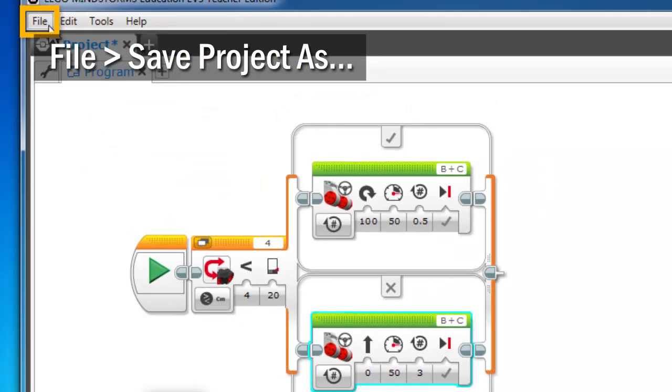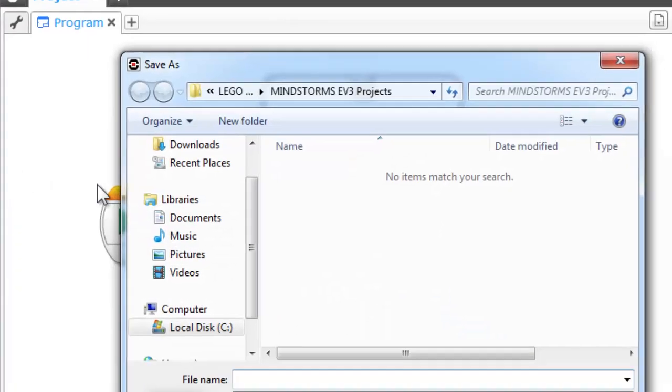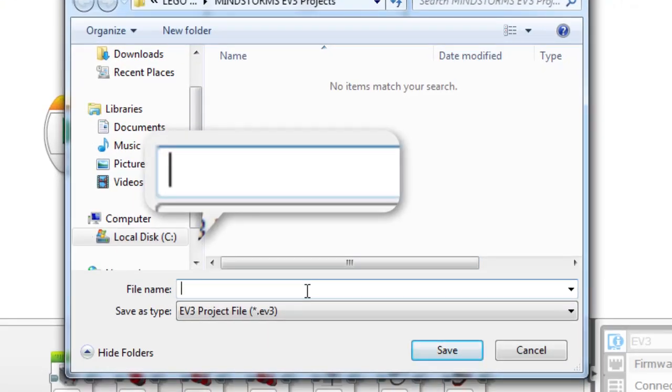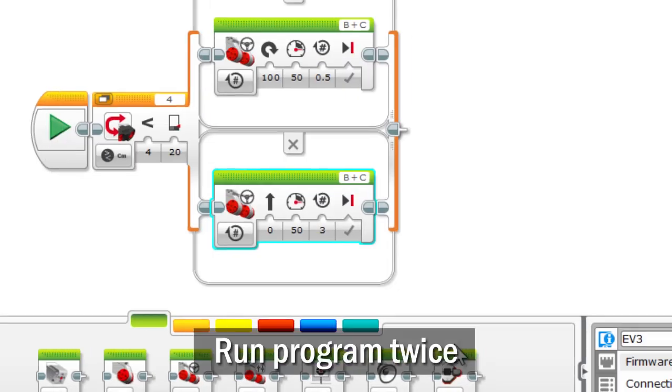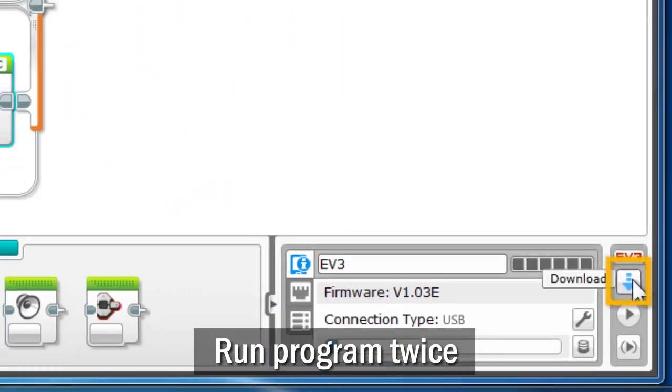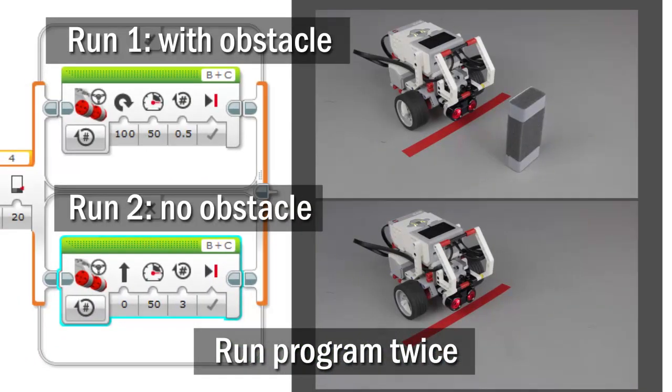Save your program as maze runner. Run your program twice, once with nothing in front of it and once with a wall in front. Pause this video now and make sure that your robot behaves appropriately in each case.